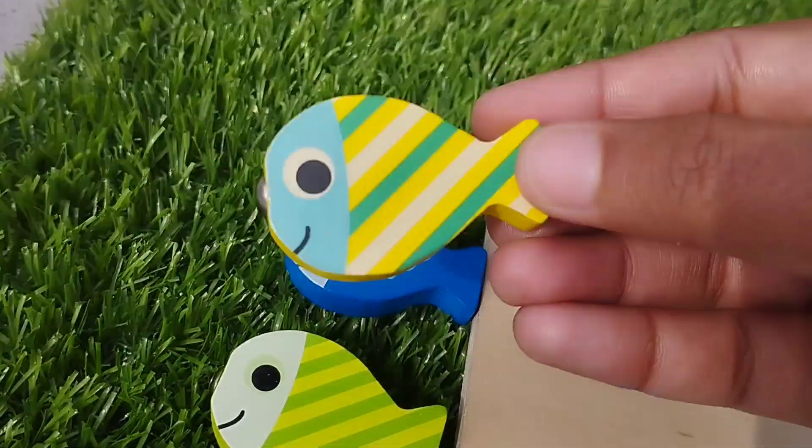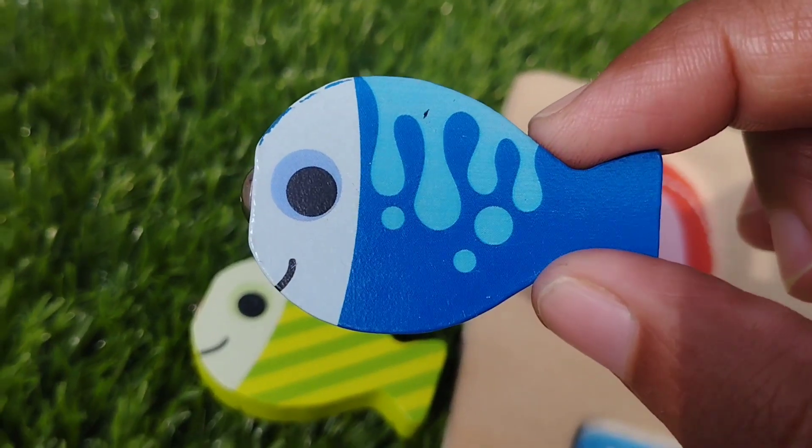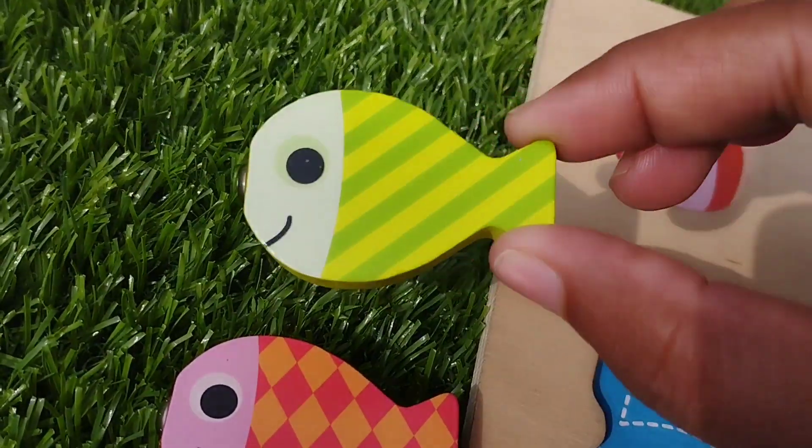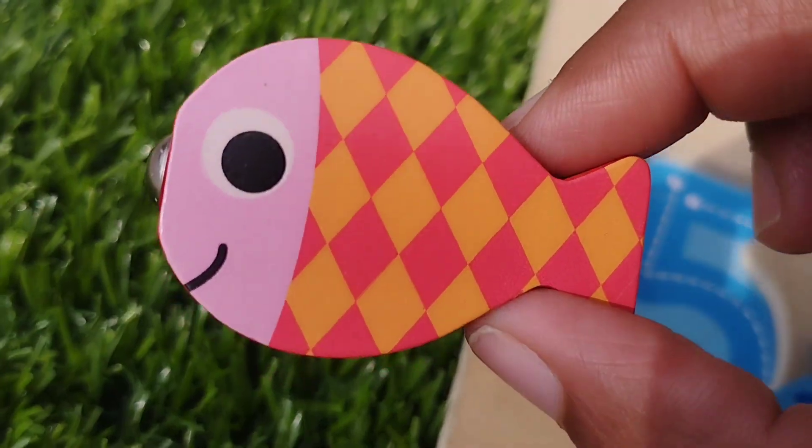Let's learn some color names. Yellow. Blue. This is blue color. Parrot. And red color.